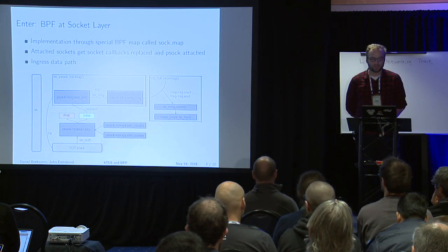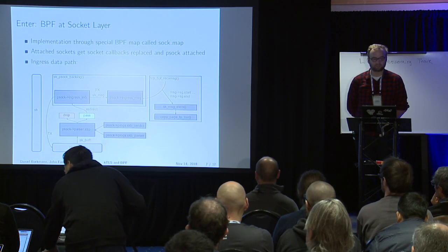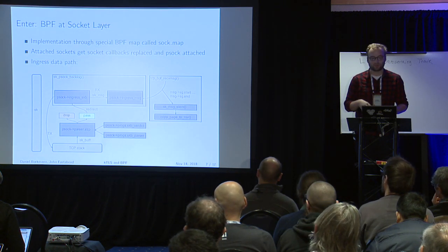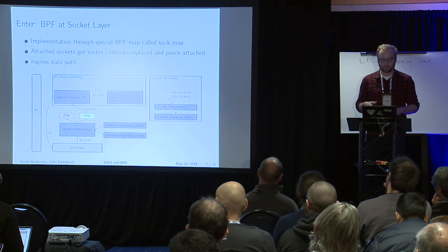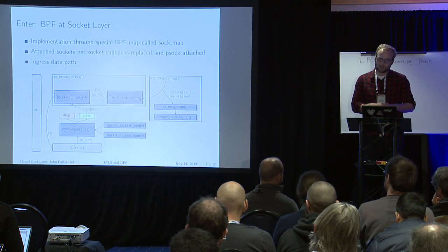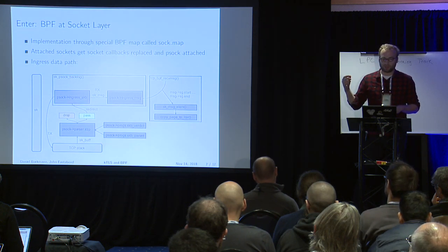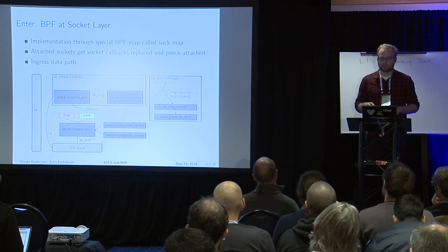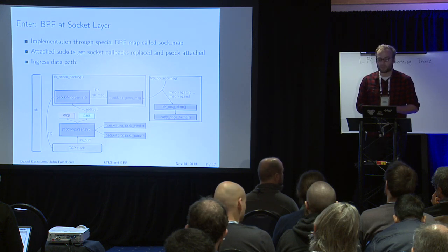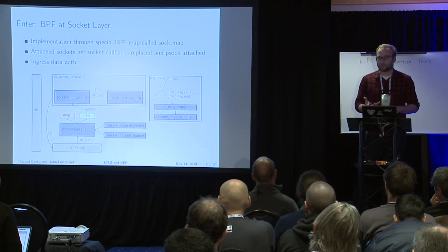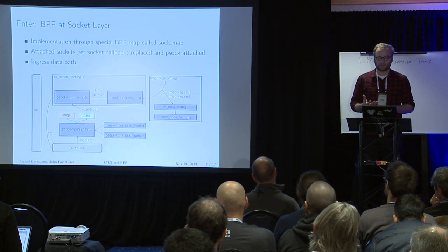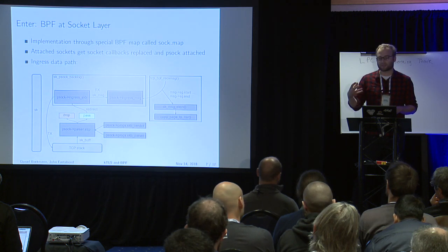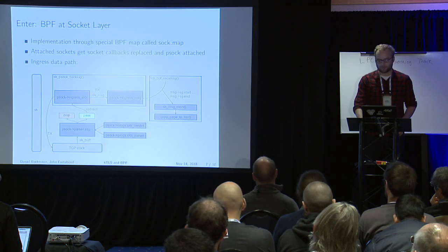When a verdict passes, it's put into an ingress SKB queue attached on the PSOCK. That worker will then internally convert that into a so-called sock message. Once the application calls receive message, it will get picked up — the sock message — from that ingress queue. Internally in that sock message, you have a scatter-list ring with start and end pointers, and then basically copy the data to userspace depending on where they are located.